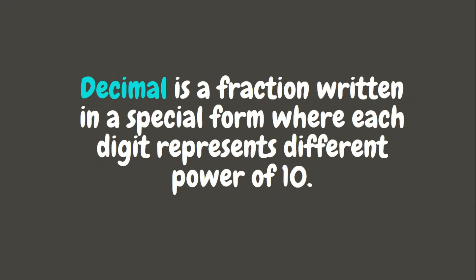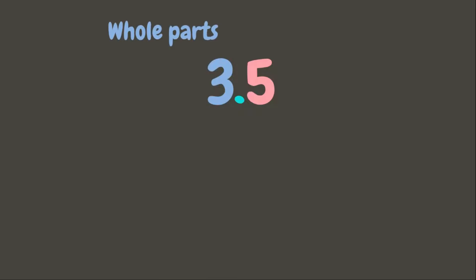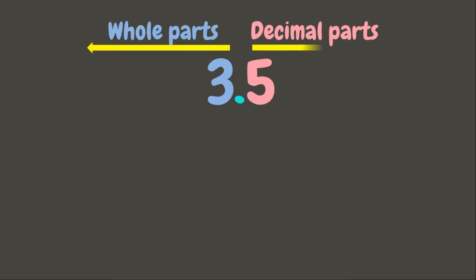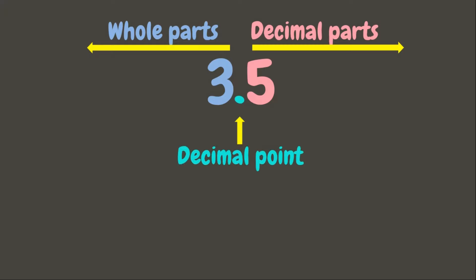A decimal is a fraction written in a special form where each digit represents a different power of ten. Let's have an example: 3.5. A decimal has two parts. The first one is the number on the left part, called the whole part, while the number on the right part is called the decimal part. The dot between the right and left side is what we call the decimal point, which separates the whole part and decimal part.